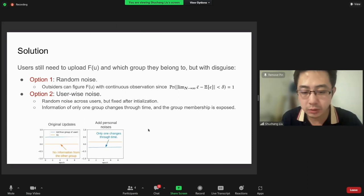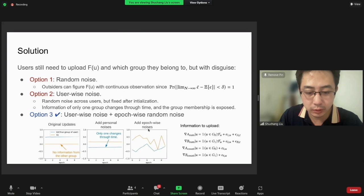So we need a user-wise noise that serves as a fixed mask. But only using this user-wise noise may also expose the info because we need to upload the information of F(u), and only one of the groups changes the value of F(u) for the other group—the user does not belong to this group, so it never changes.